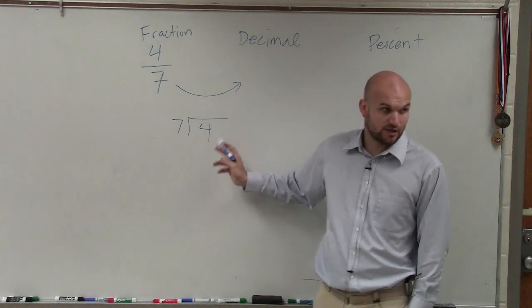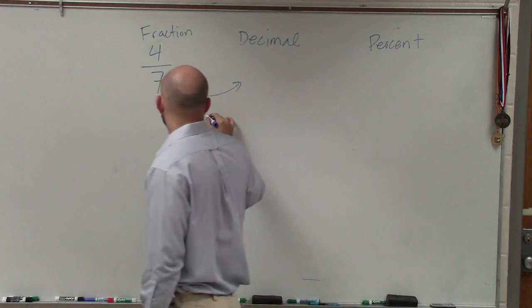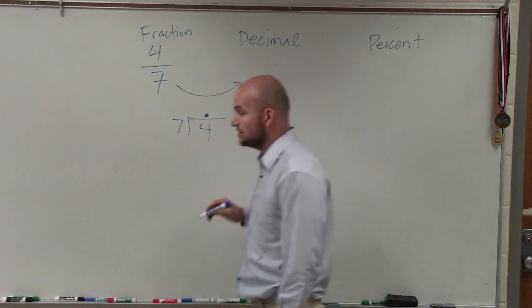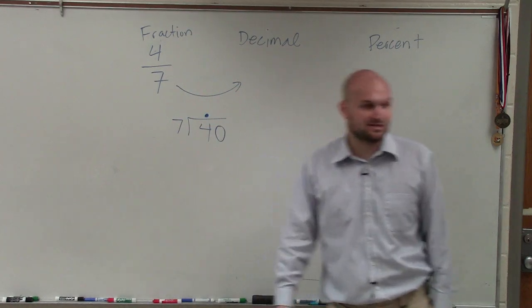Now, 7 does not go into 4. So therefore, I write a decimal point. Then I bring in, once I create a decimal point, I can add in my zeros.